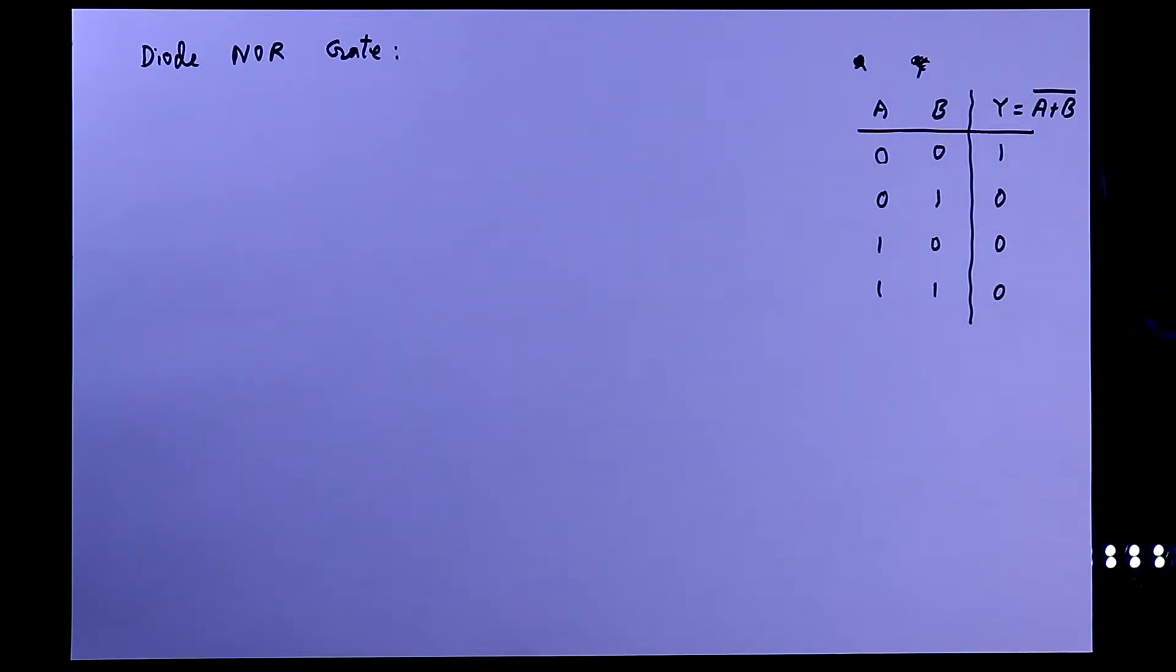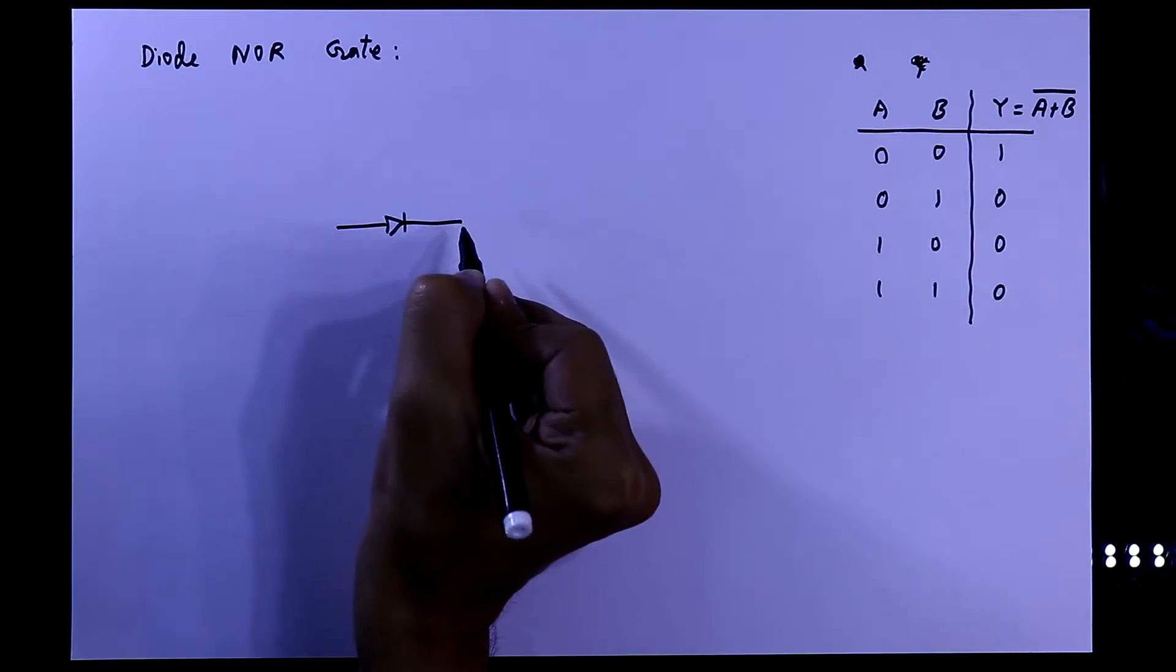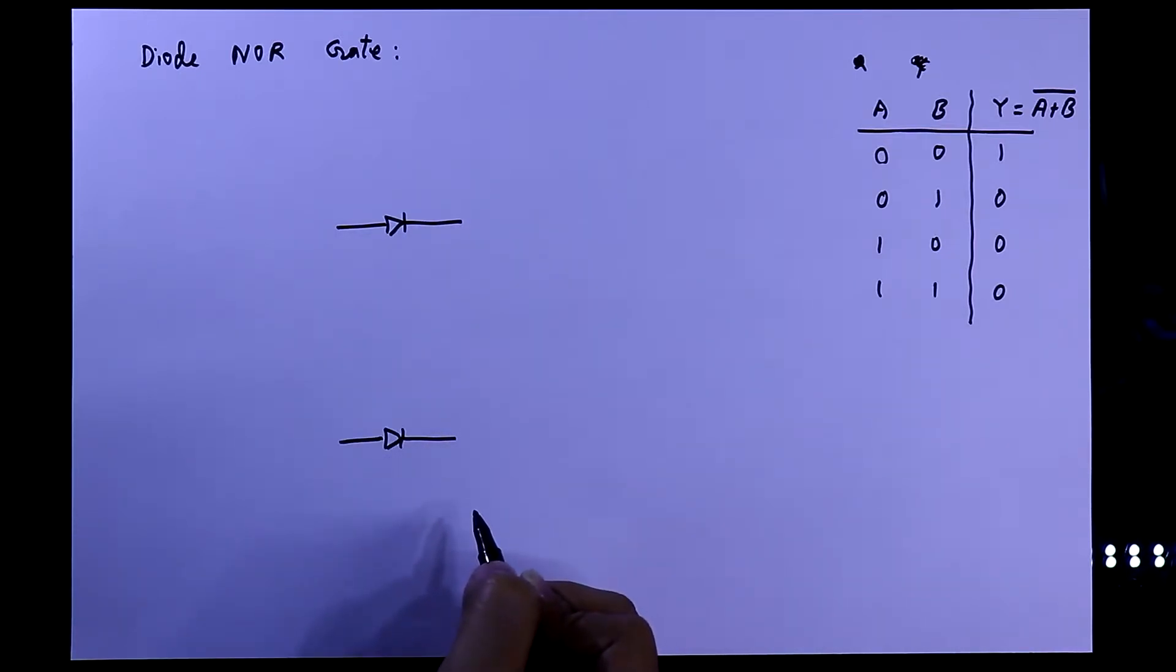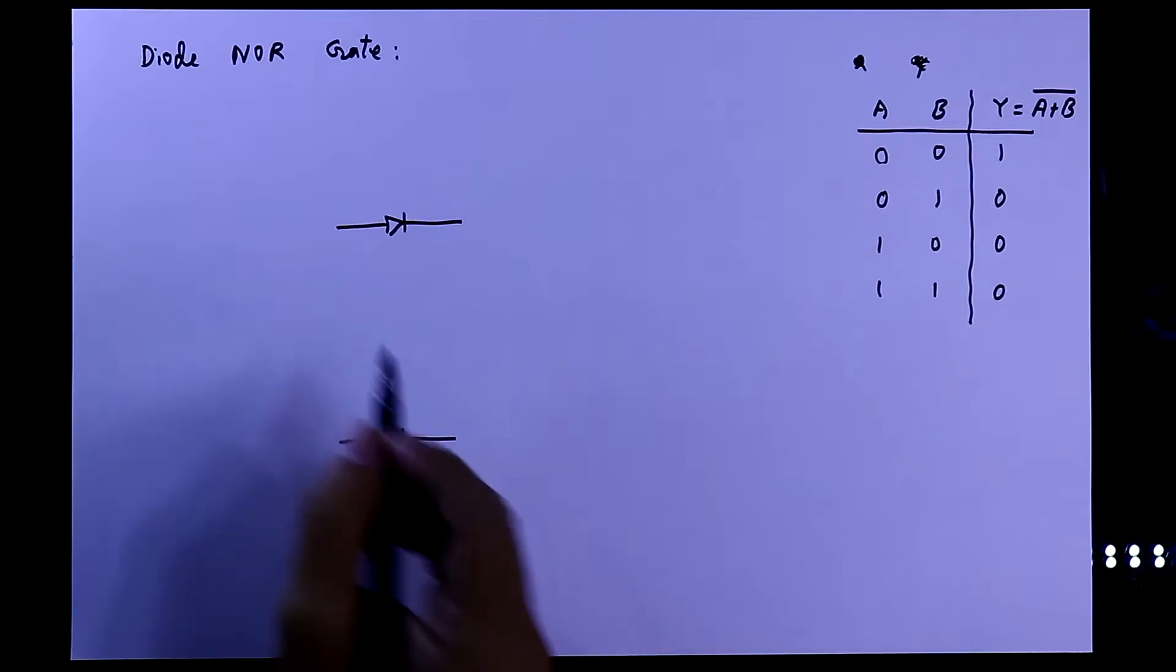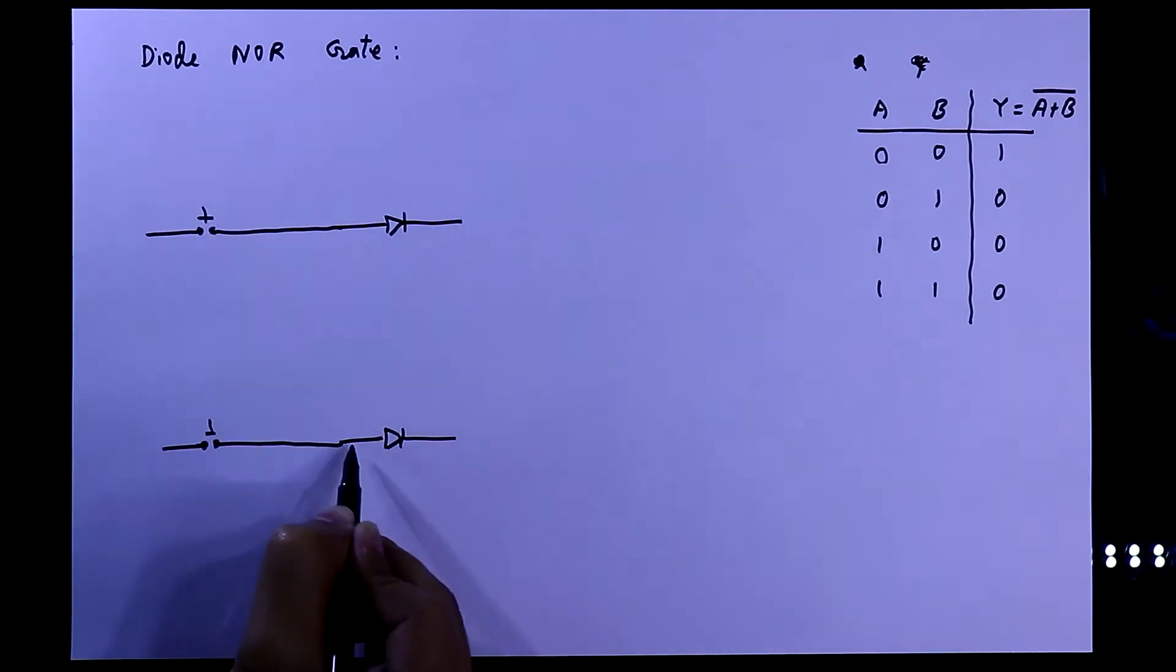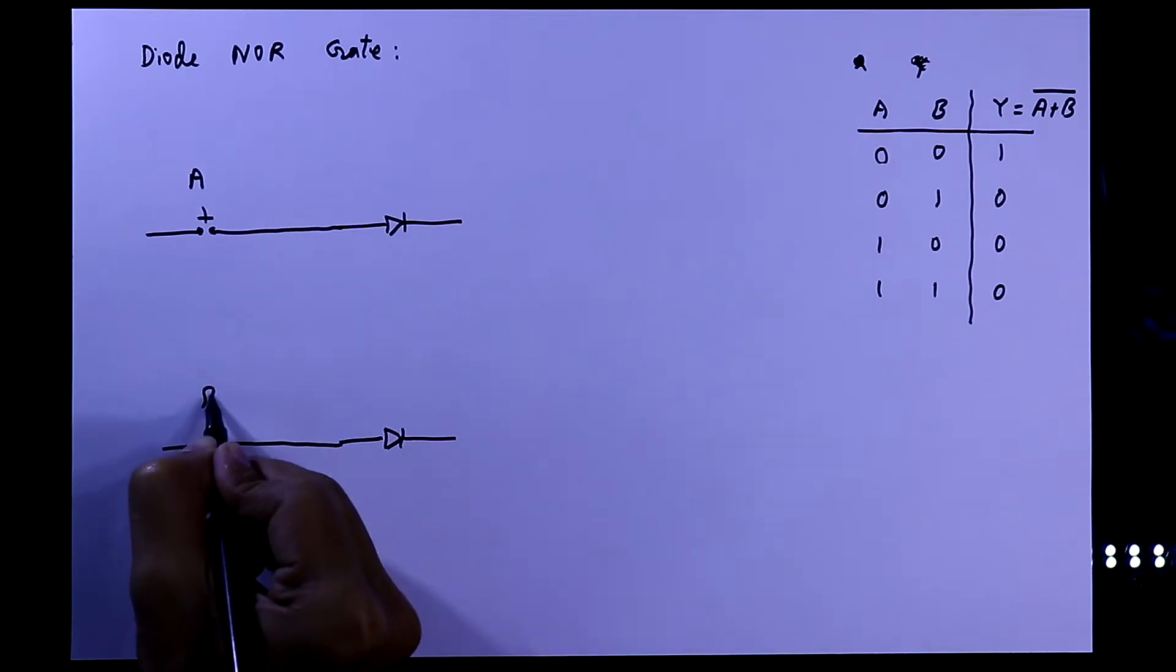We need two diodes. Here is one and another one. We will provide input with push button switch. So this will be our A. It is B.